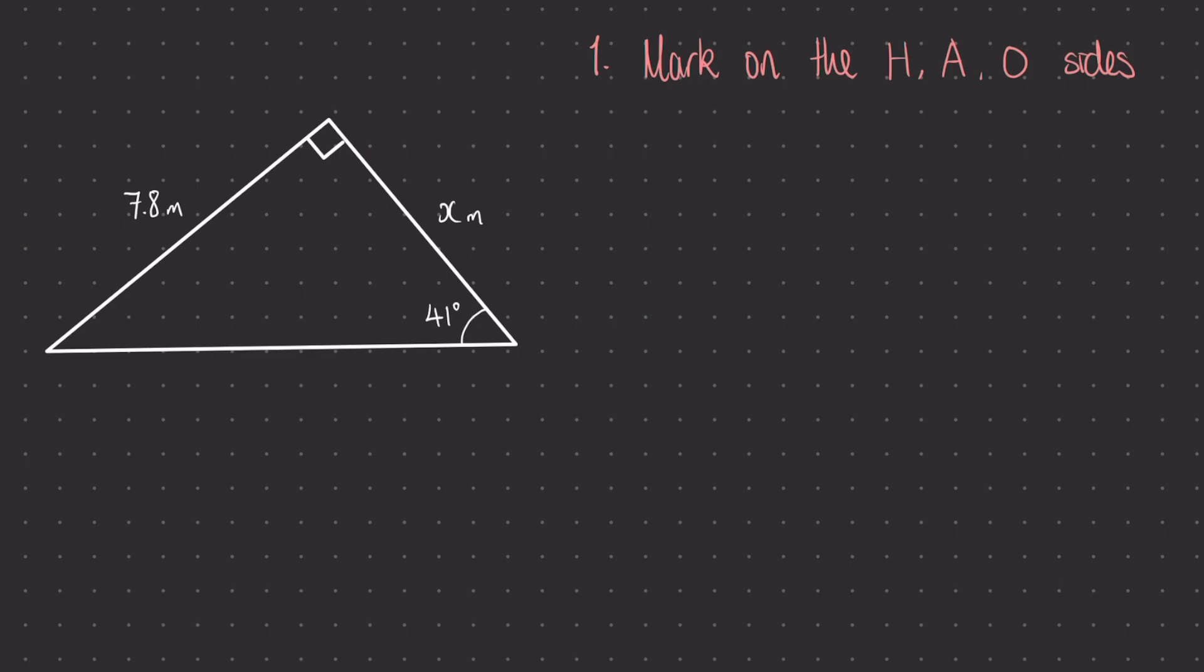I've placed hypotenuse first because that is the easiest side of our right angle triangle to label, it's always opposite 90 degrees. In this case it'll be this bottom side here.